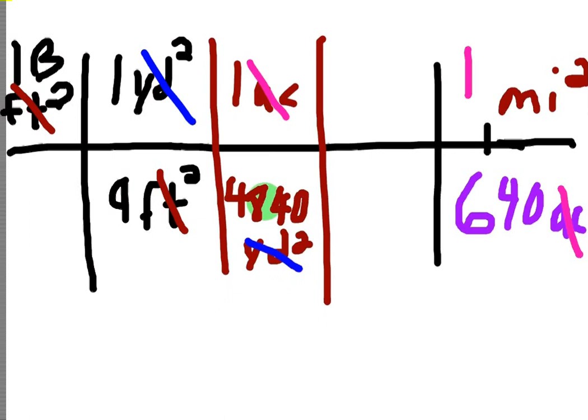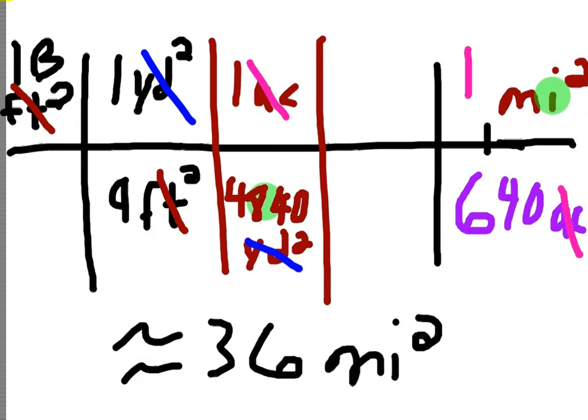So ultimately what we're going to be doing, I'll do this on the calculator. We're going to take one billion. We're going to be dividing by nine times 4,840 times 640. And that should give us how many square miles we have. So let me pull that up. So it's going to be approximately 36 square miles in a billion acres.